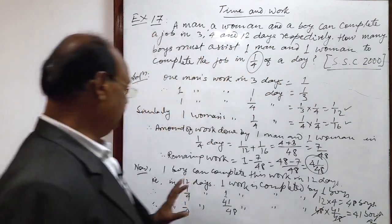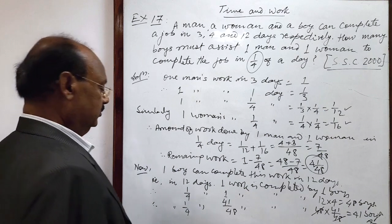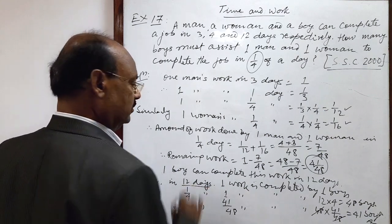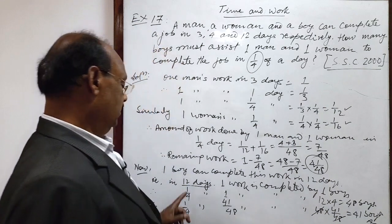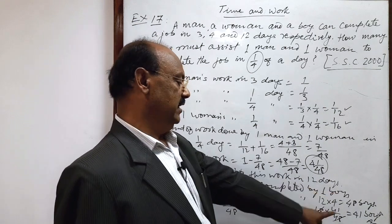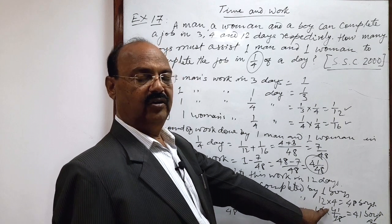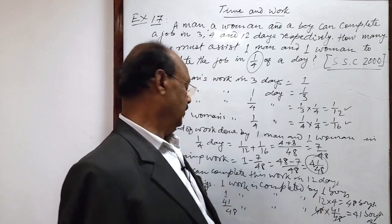Here, you keep a note here, that in 12 days, 1 boy can complete a work, so in 1 day, number of boys will increase. That is why we will multiply, not divide, as unitary method. Ok?